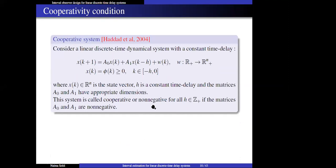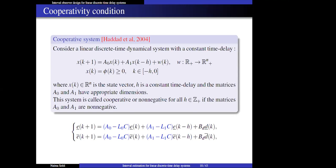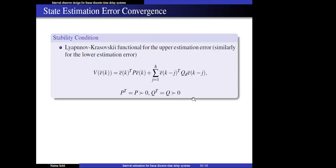We begin with the cooperativity property. A cooperative time delay system requires matrices A0 and A1 to be non-negative, W to be positive, and the initial function vector to be positive. According to this definition, we prove the cooperativity of the error dynamics: the uncertainty terms are positive, the initial condition of the error is positive since the state value is between two bounds, and if we have the appropriate observation matrices, the system is positive. To satisfy the stability of the proposed interval observer, a Lyapunov function is introduced for the stability analysis.